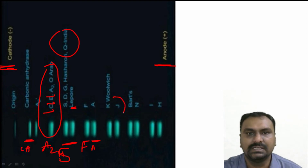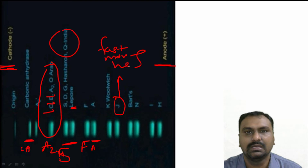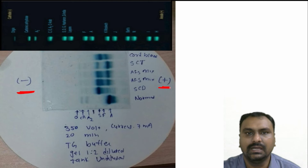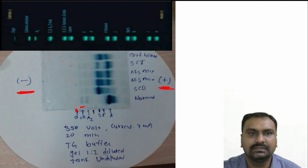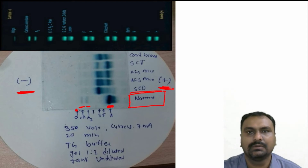HbJ Meerut, which is found in India, is a fast-moving hemoglobin. You can see here this is the cathode side, this is the anode side, and this is the point of application. You can appreciate the carbonic anhydrase band, that is the A2, and that is the band at the A region. So this will be the normal person's hemoglobin electrophoresis.